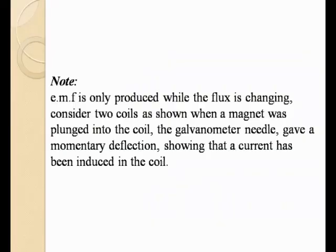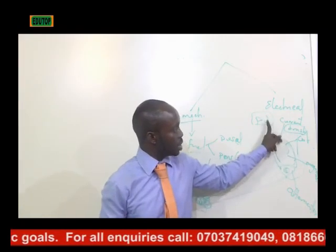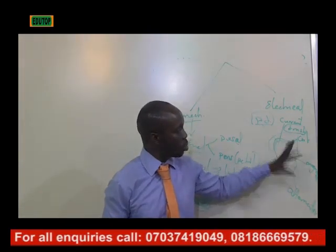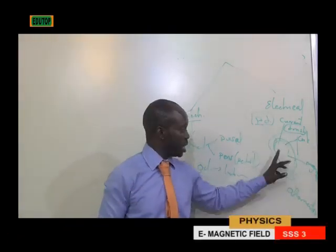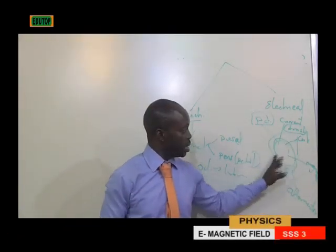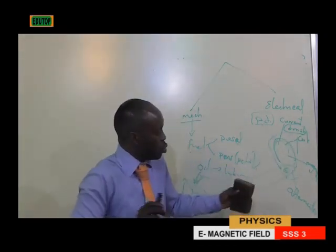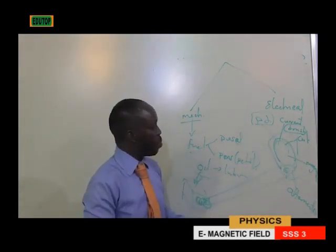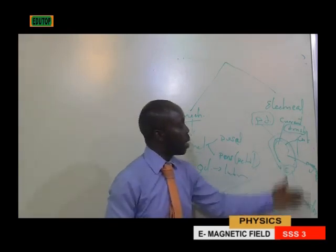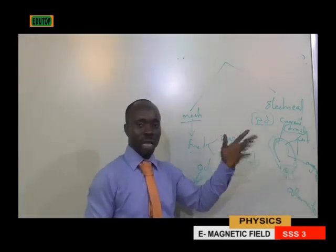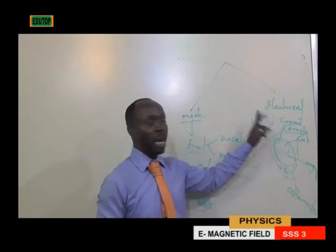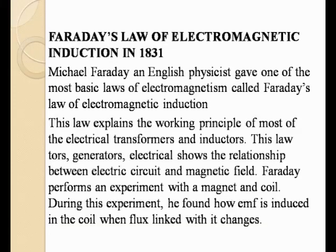Note: EMF is only produced while the flux is changing. The potential difference will be produced at this section because the flux is changing. In this alternator there are magnets which always attract, but there is a coil in between that breaks that force of attraction — that is the flux — so that EMF will not be produced when flux is constant. Let's proceed.